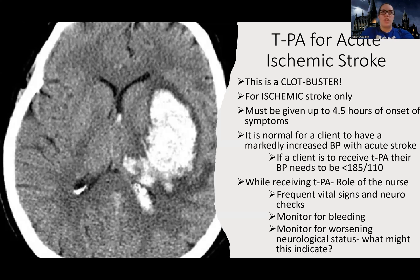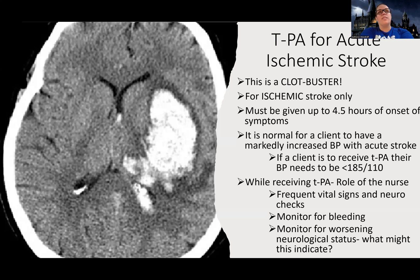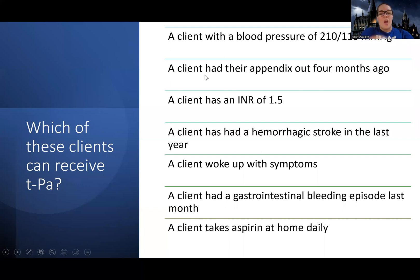Before giving TPA, we confirm it's an ischemic stroke, not hemorrhagic, verify the patient is within the time window, and ensure blood pressure is stable. TPA is given quickly — usually over about 20 to 30 minutes, typically in the ER. After administration, we monitor vital signs and neuro checks every 15 minutes for several hours, then every 30 minutes, then every hour for roughly 24 hours. Mental status should be improving, not worsening. If it worsens, we may need to stop the medication.